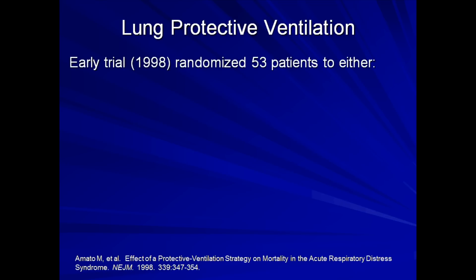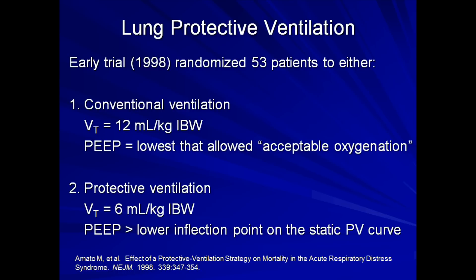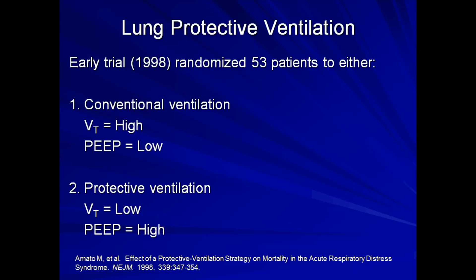The first significant trial showing possible benefit to lung protective ventilation came in 1998, where 53 patients were randomized to either conventional ventilation — in which they were given tidal volumes of 12 mL per kg of ideal body weight and the lowest PEEP that allowed acceptable oxygenation — or protective ventilation, in which they were given tidal volumes of 6 mL per kg of ideal body weight and the PEEP was set to no less than the lower inflection point on the static pressure-volume curve. What this amounted to was the conventional group had high tidal volumes and low PEEP, while the protective group had low tidal volumes and high PEEP.